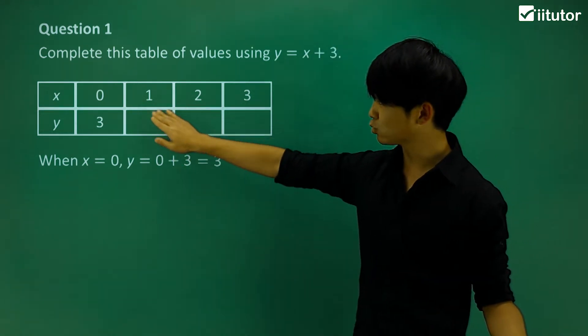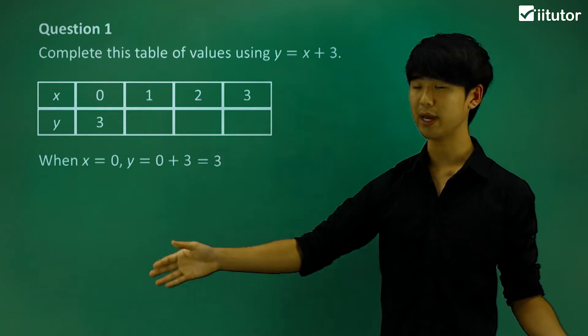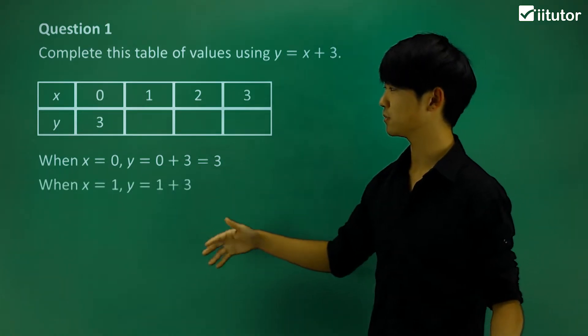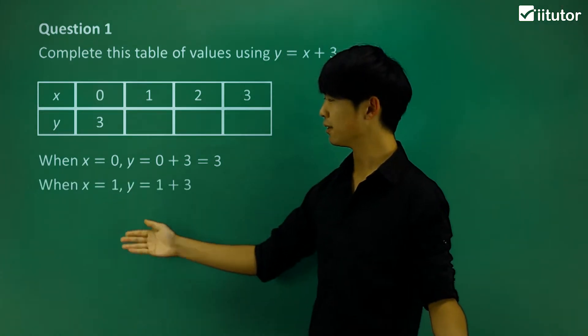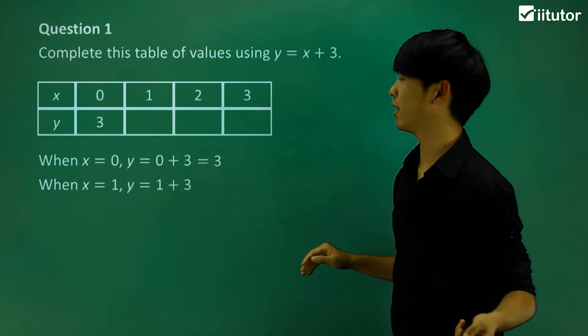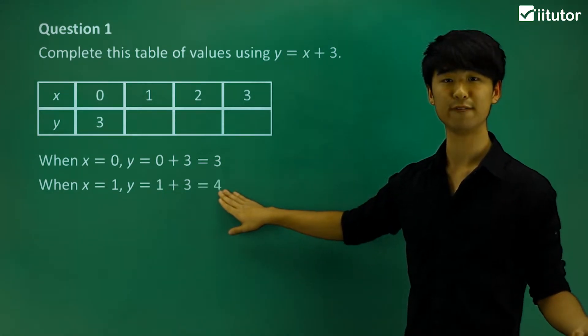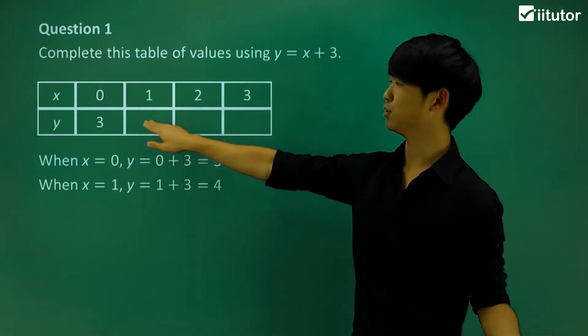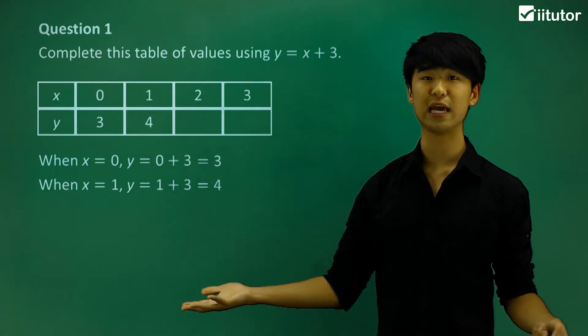If we take a look at the next one, we're going to do the same thing. I want you to lay it out exactly like this. When x equals 1, y should equal 1 plus 3 this time, because x is 1. In this case, y would be 4. Then let's just put the value of 4 into the table of values.